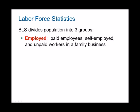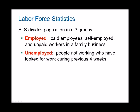The first group is employed — people who are working as paid employees, are self-employed, or are unpaid workers in a family business. The second group is unemployed workers — people who are not working but have been looking for a job for the past four weeks. Four weeks is the cutoff point. If someone looked for a job six weeks ago, they're not considered unemployed. But if someone has been looking for the past four weeks, they are considered unemployed.